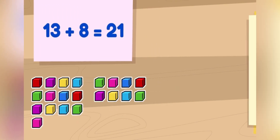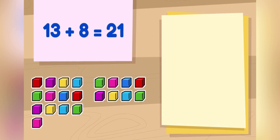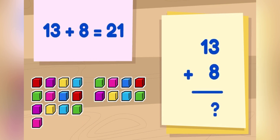Now let's solve it another way by adding from top to bottom. First, we add the 1's place together. But 3 plus 8 equals 11, and that's more than one digit. That means we should write the 1's place here and bring the 10's place up here.